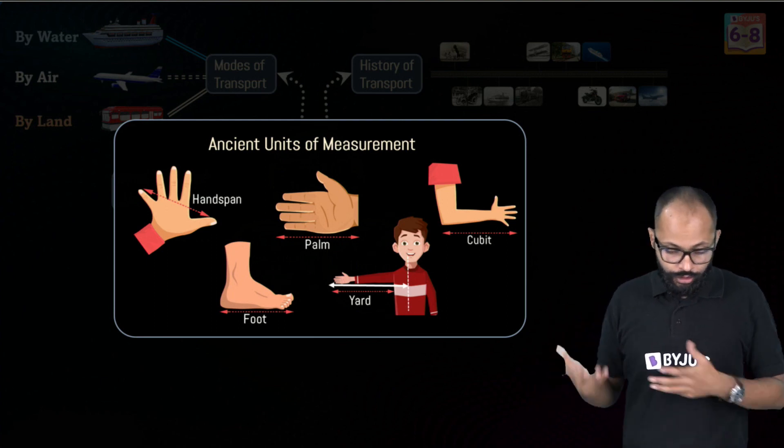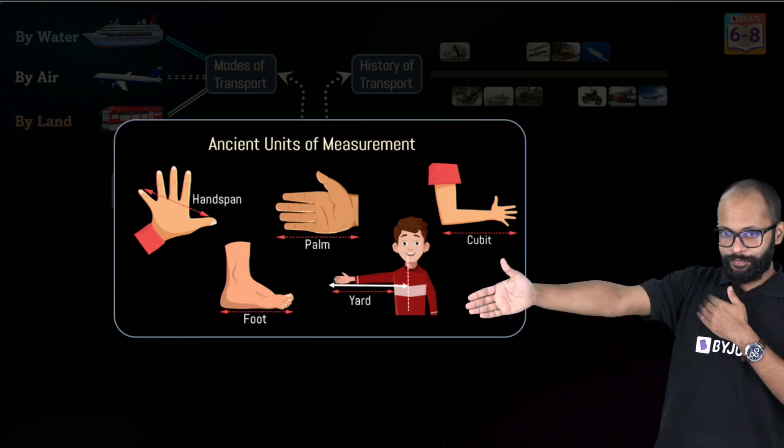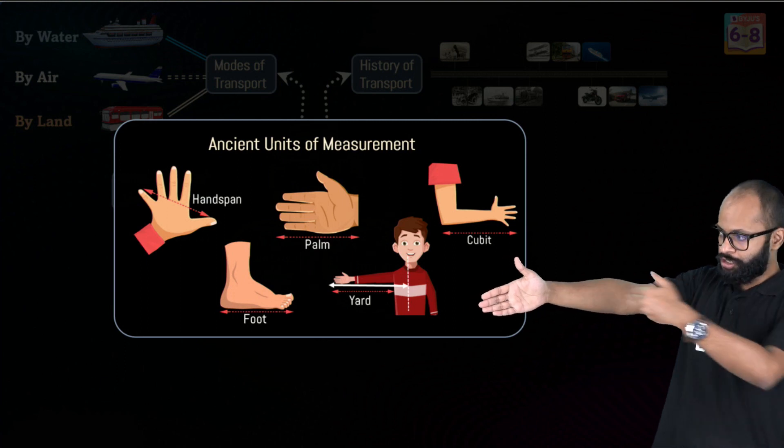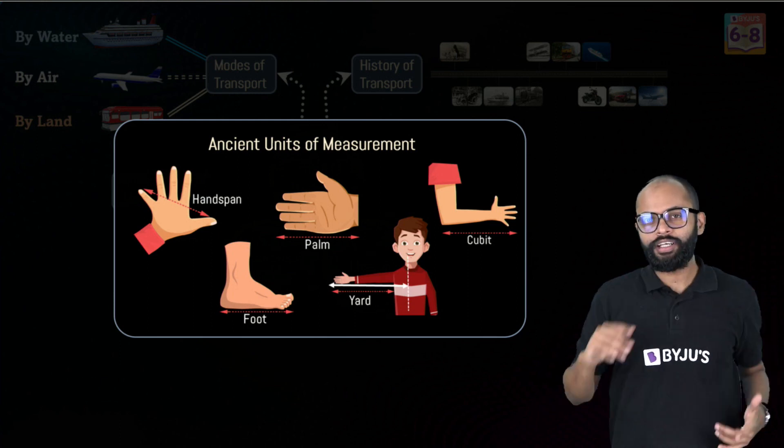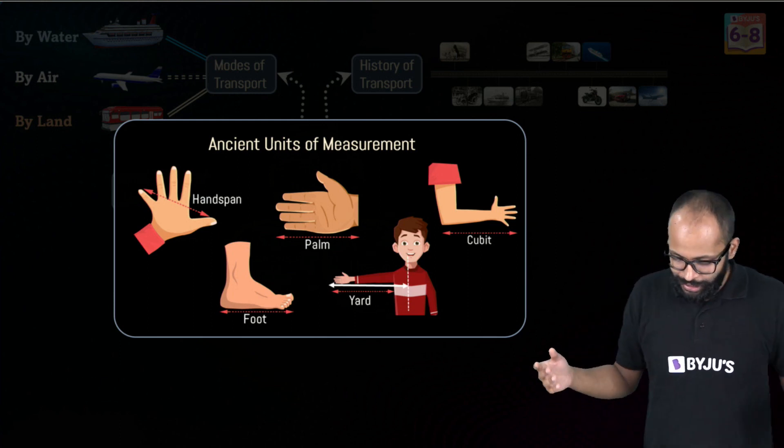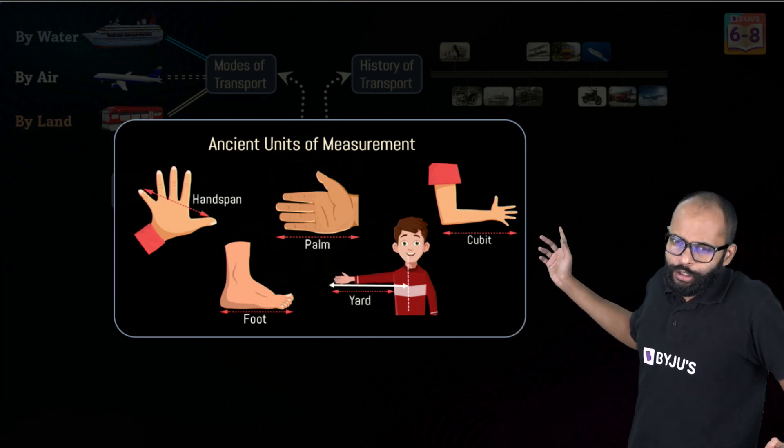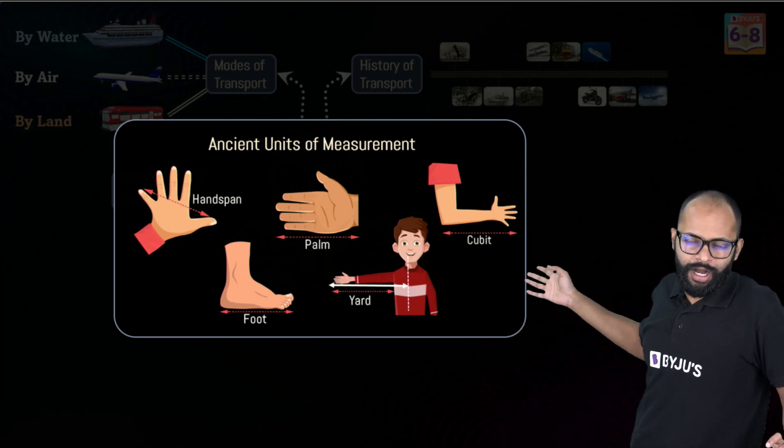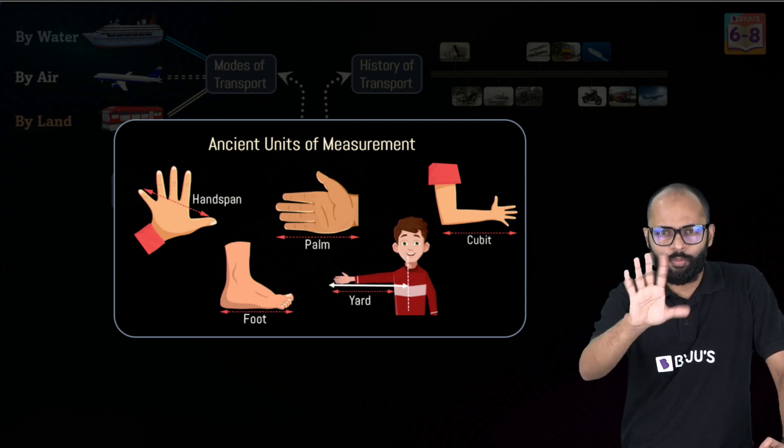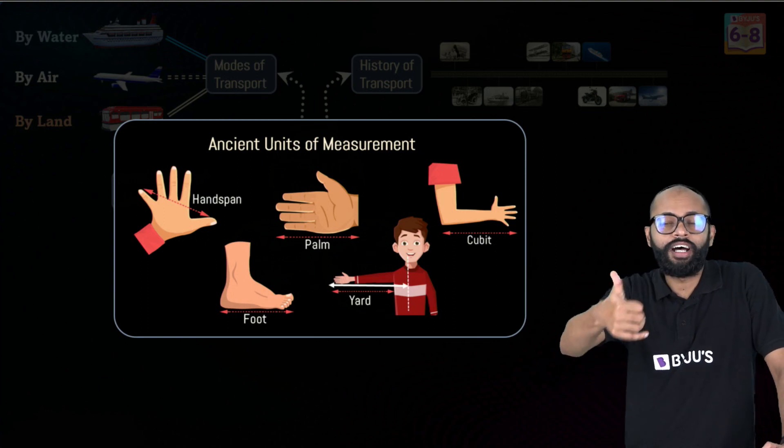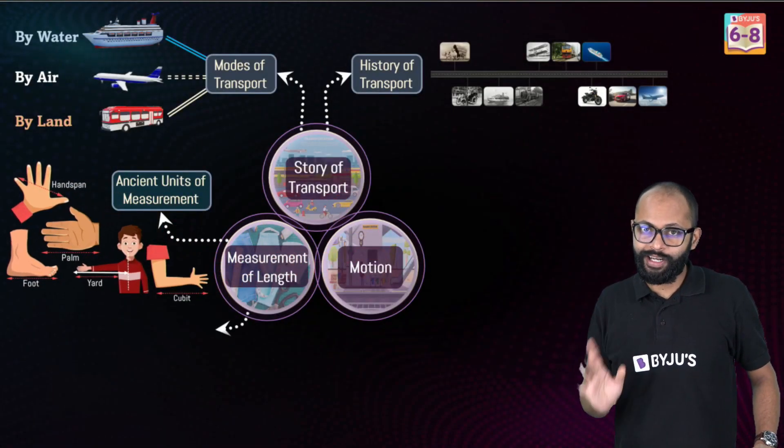They used to use their body parts. Hand span was from thumb to pinky finger, foot was the length of a foot, palm was the length of your palm, yard was from the center of the chest to the finger, cubit from your elbow to the tip of your middle finger. All these are ancient units of measurement. But there was a problem - do you think everybody has same length of palms? I showed you in the live session that my palm was different than Jesima sir's than Akansha ma'am's.